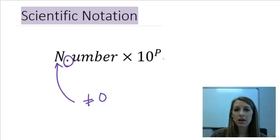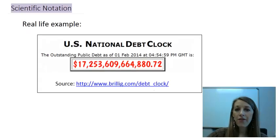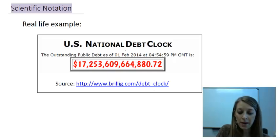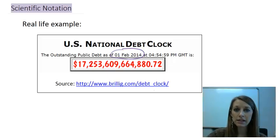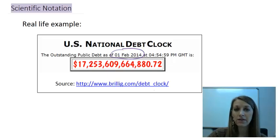Now that I've explained what it is, let me give you a real-life example of scientific notation — one you probably hear about weekly, if not more. My favorite real-life example is the U.S. national debt. As of February 1st, 2014, the national debt is $17,253,609,664,880.72.